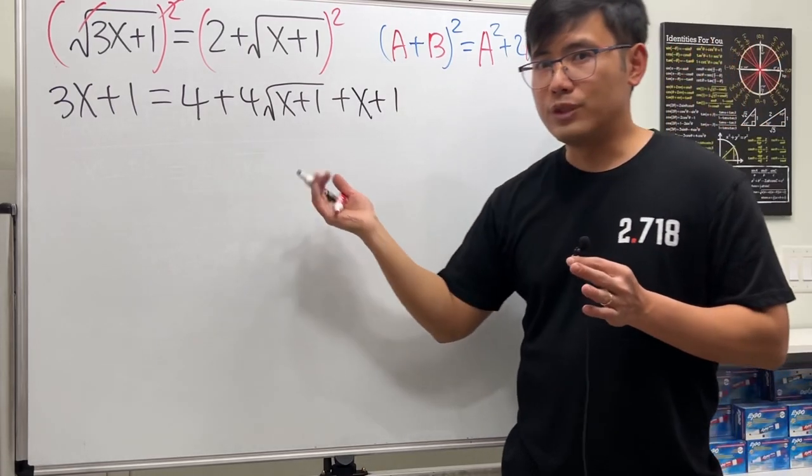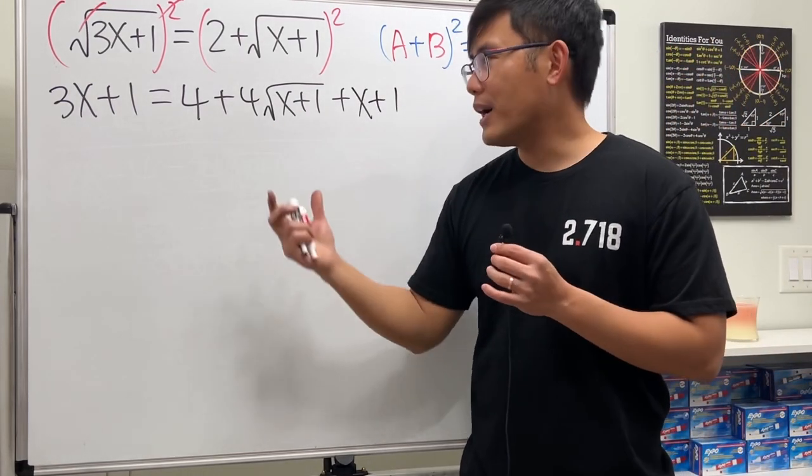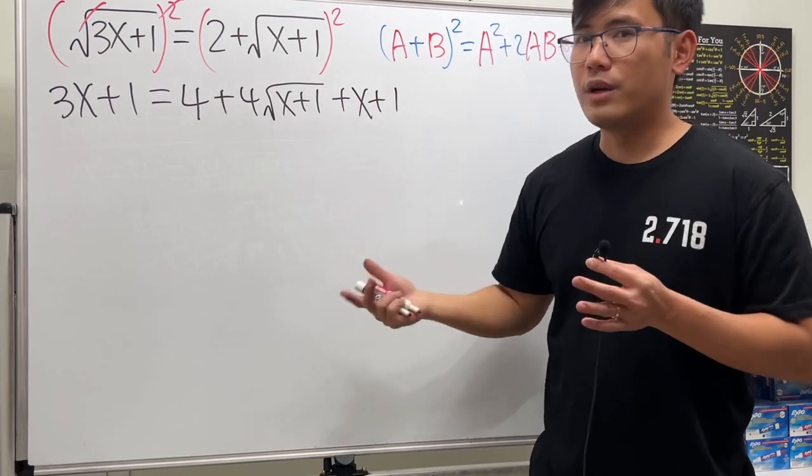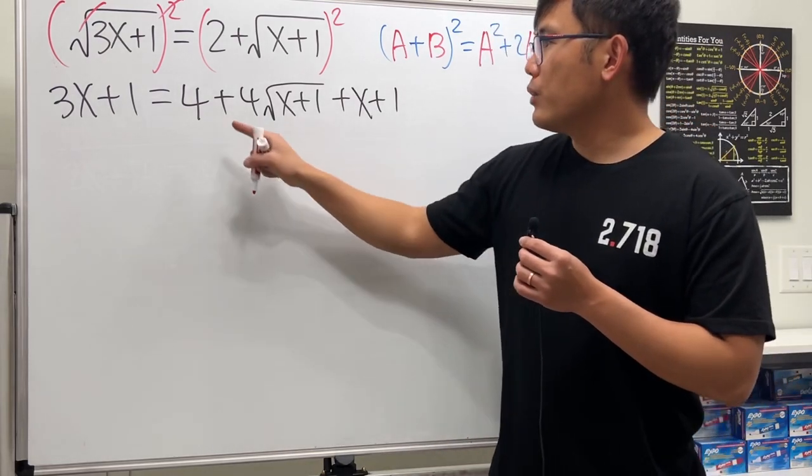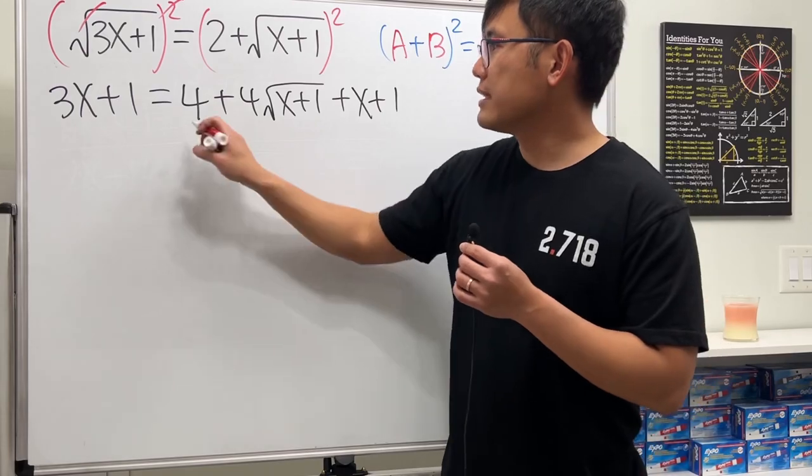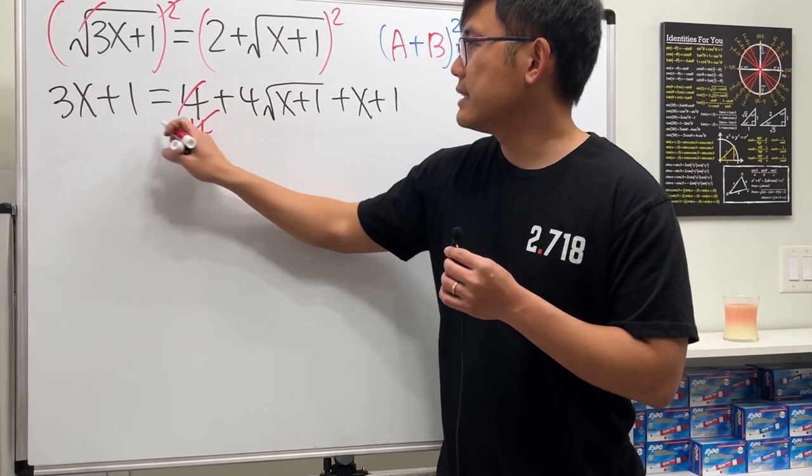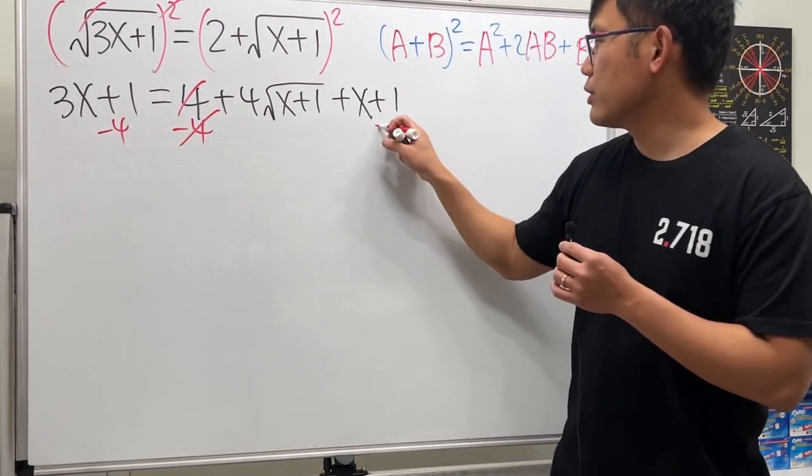Okay, we still have this square root. So we will try our best to isolate this turn here, and then square both sides again. So let me move the numbers to the other side. That's minus 4 on both sides, so they cancel, and that's also minus the 1 here.